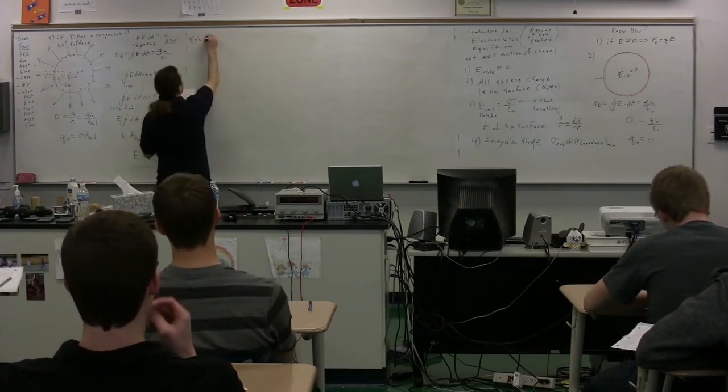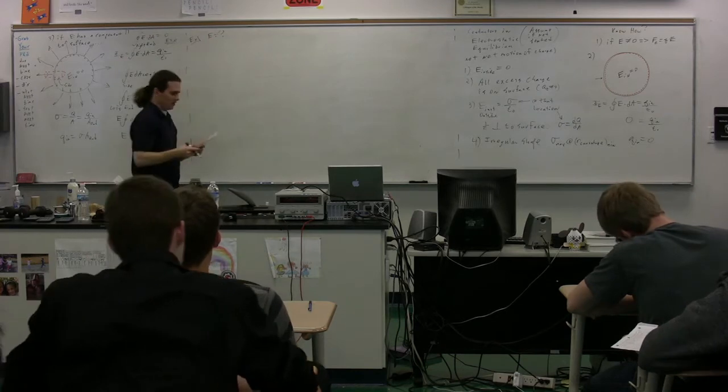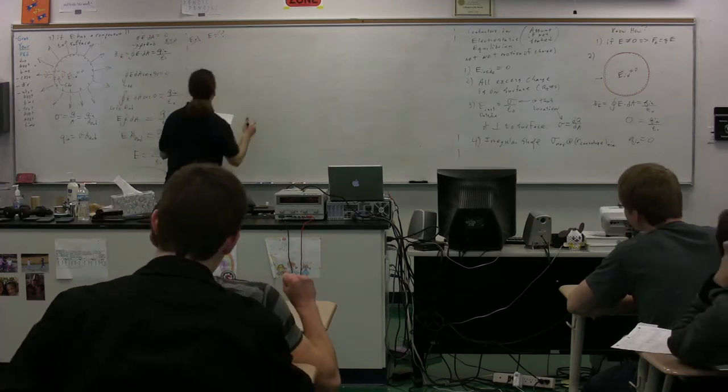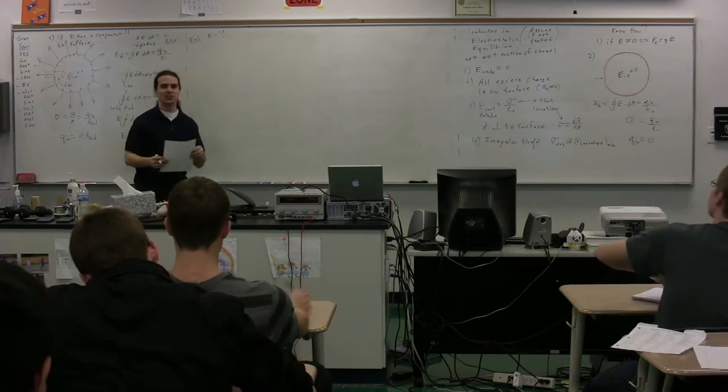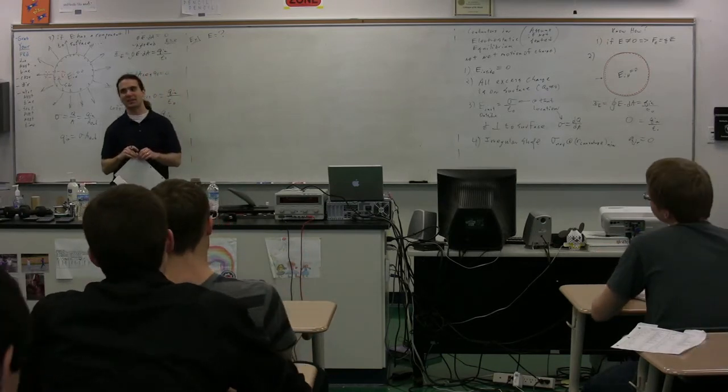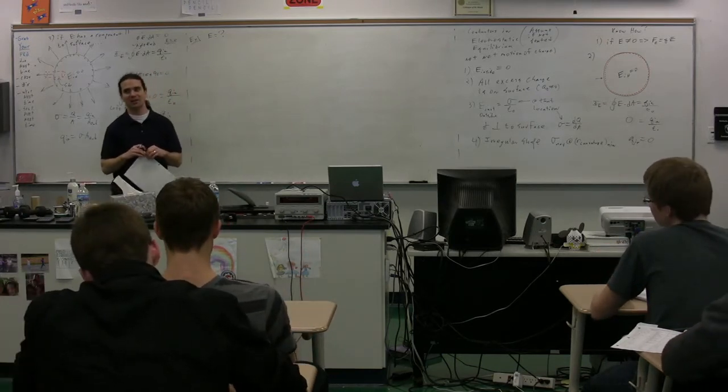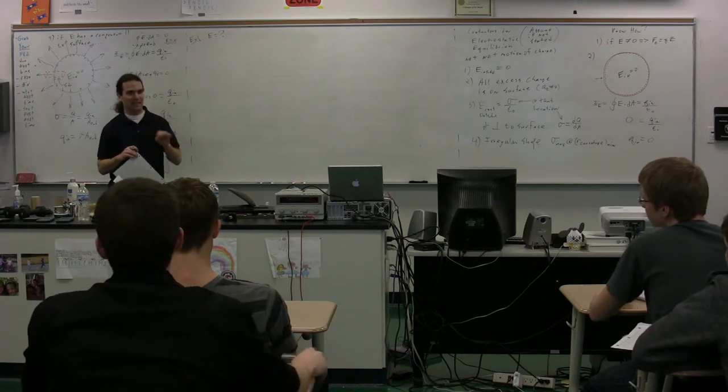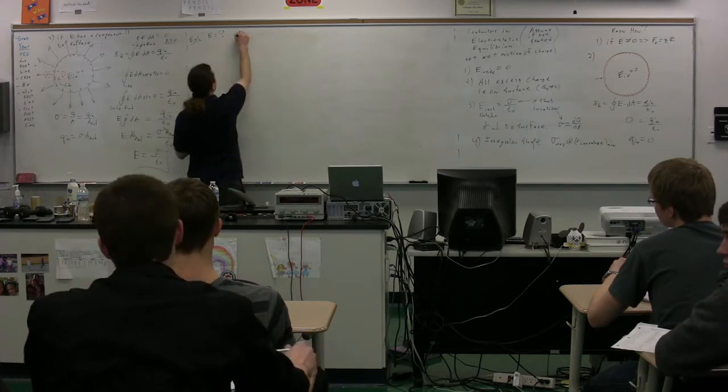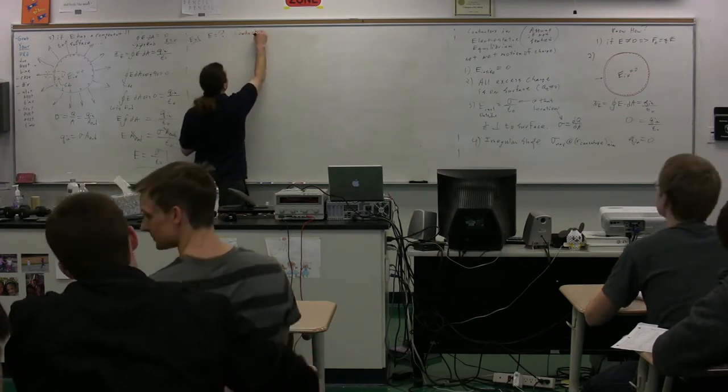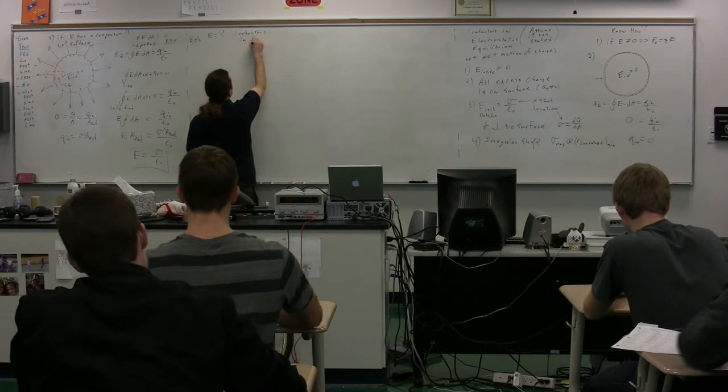So here we have, we're going to figure out an electric field everywhere for two different concentric objects. Concentric objects - this is a term you're going to hear several times. They have the same center point. They're all conductors in electrostatic equilibrium.